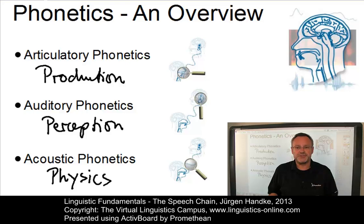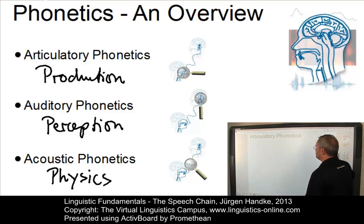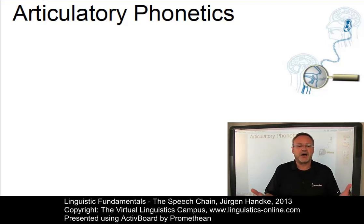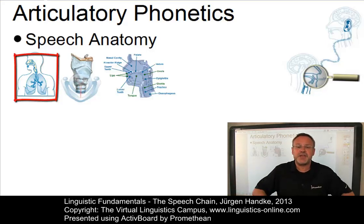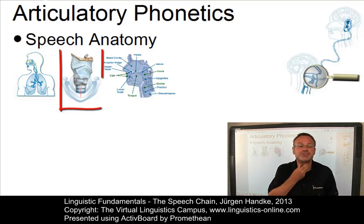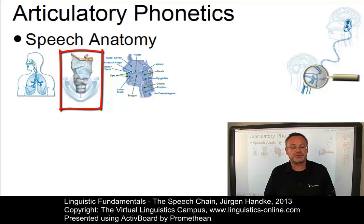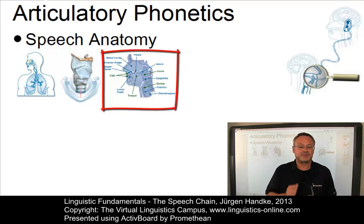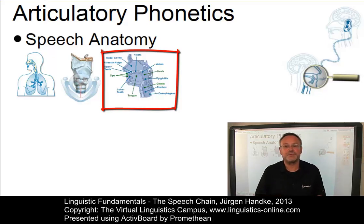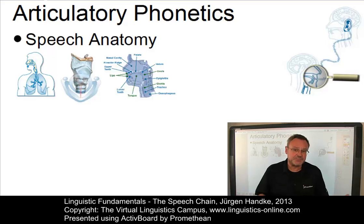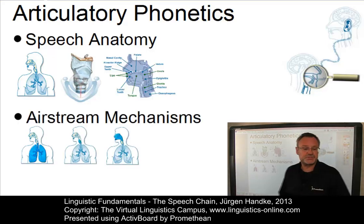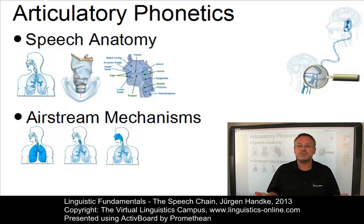Let us now look at the main goals of these sub-branches. Articulatory phonetics investigates how speech sounds are produced. This involves some basic understanding of the anatomy of speech — for example, of the lungs, which produce the necessary energy in the form of a stream of air; the larynx, that serves as a modifier to the airstream and is responsible for phonation; and the vocal tract, which modifies and modulates the airstream by means of several articulators. Furthermore, since all speech sounds involve some sort of air, articulatory phonetics also discusses the central airstream mechanisms involved in producing the types of airstreams used for speech.